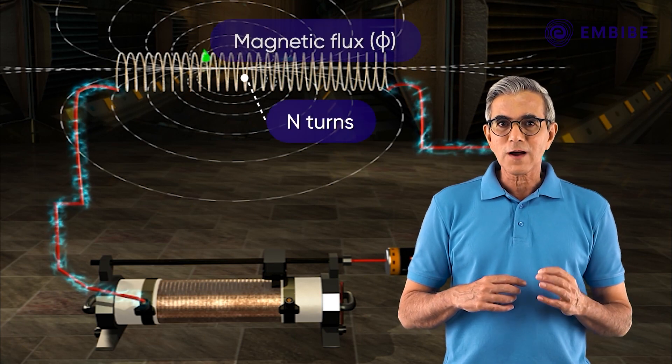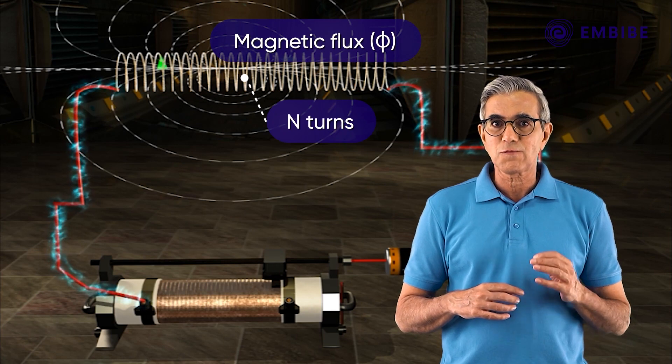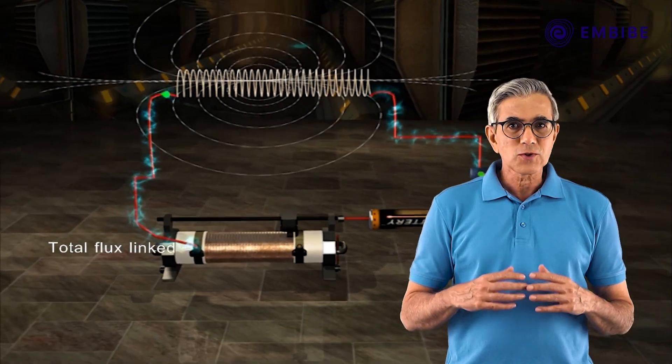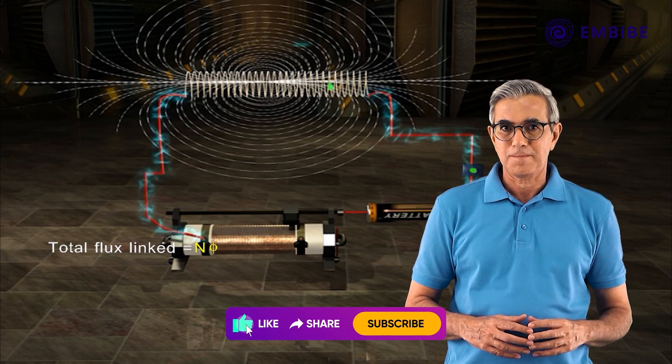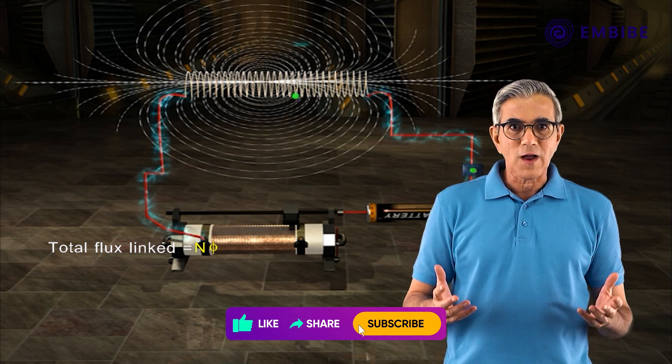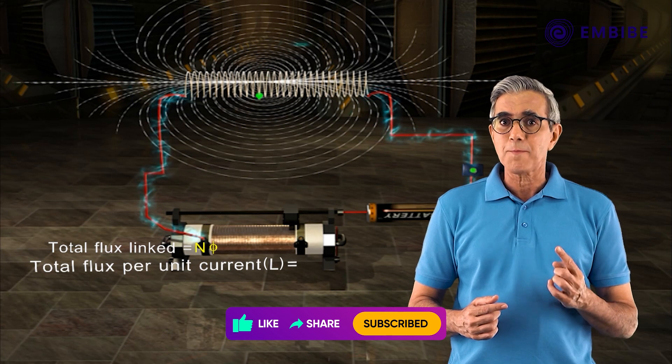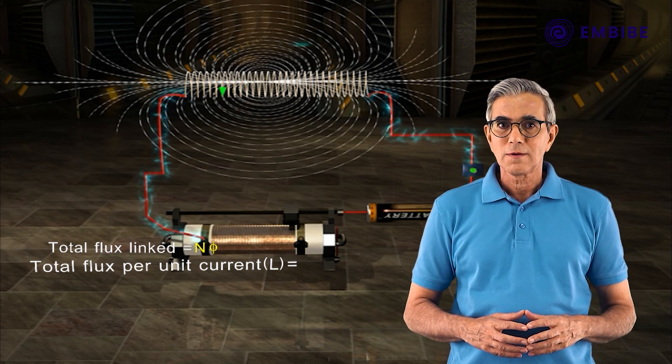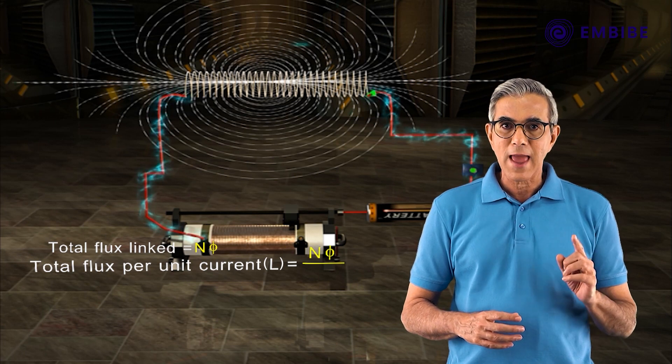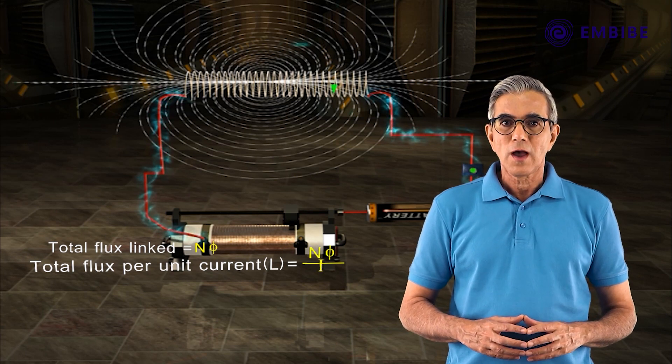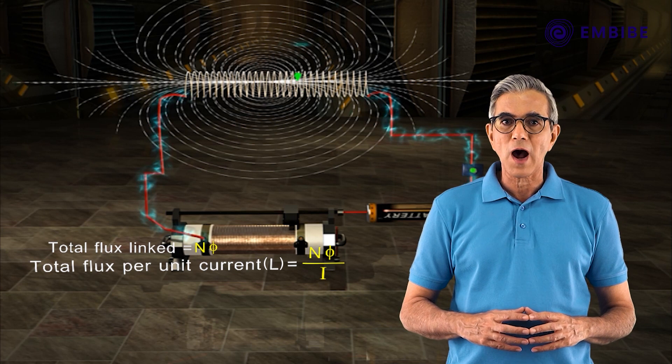If the number of turns in a coil is N, and the flux linked with each turn is phi, then the total flux linked with the coil is N phi. Now, if the flux is due to a current I passing through the coil, the total flux per unit current is L = Nφ/I.